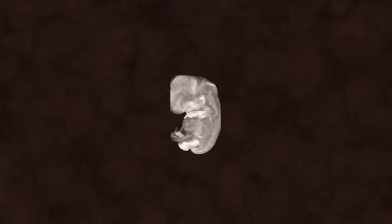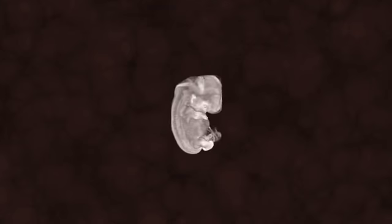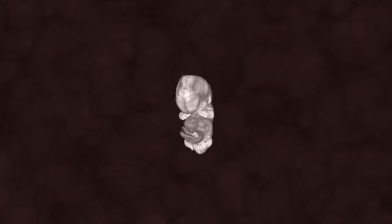Another few days, and the embryo has upper limbs slightly bent at the elbows, short stubby fingers, hands curving over towards each other, but still far apart.